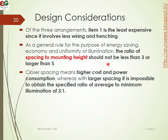Closer spacing means higher cost and power consumption. With very small spacing, we have higher power consumption and higher cost. With larger spacing, it is impossible to obtain the specified ratio of average to minimum illuminance.